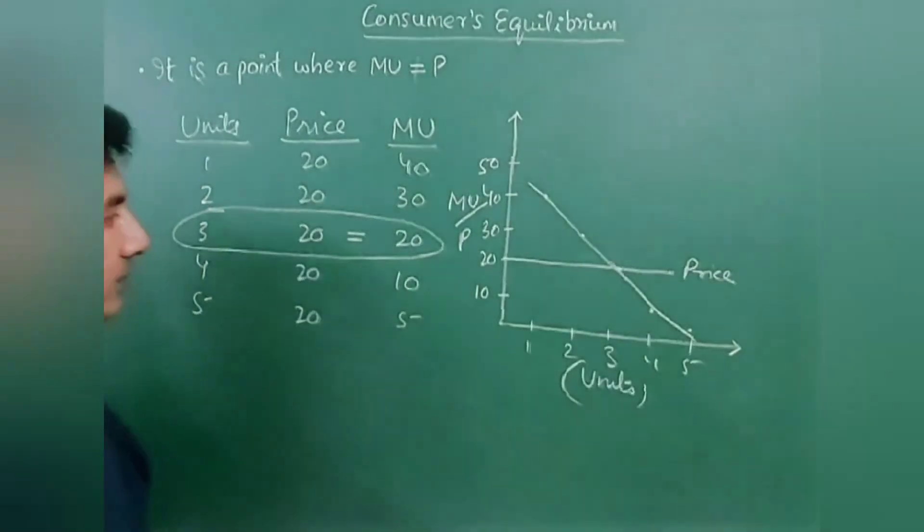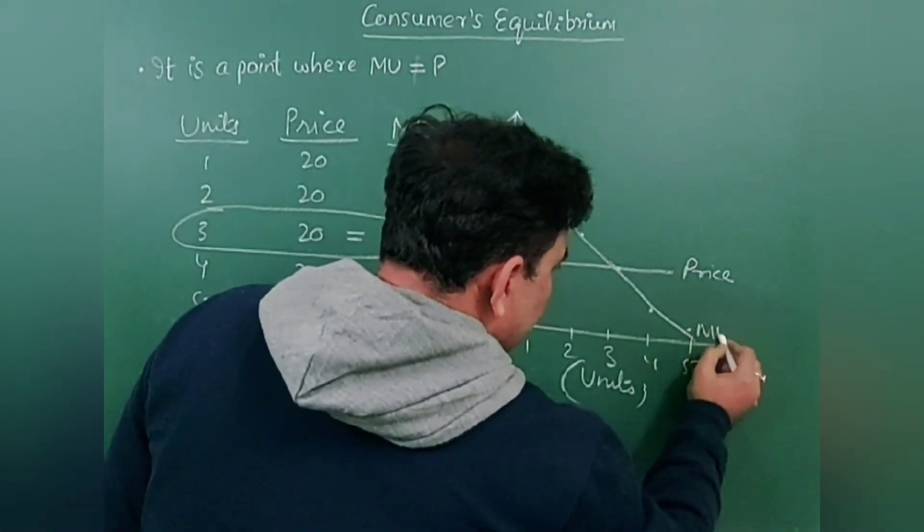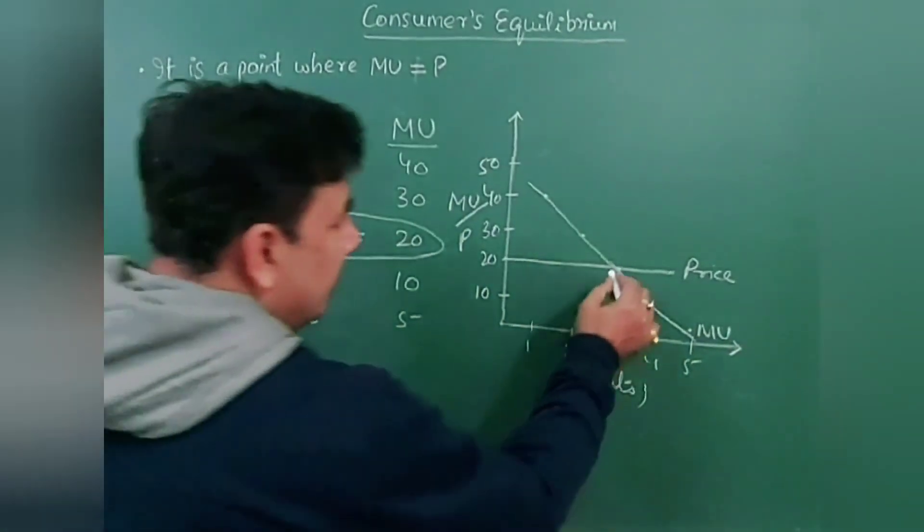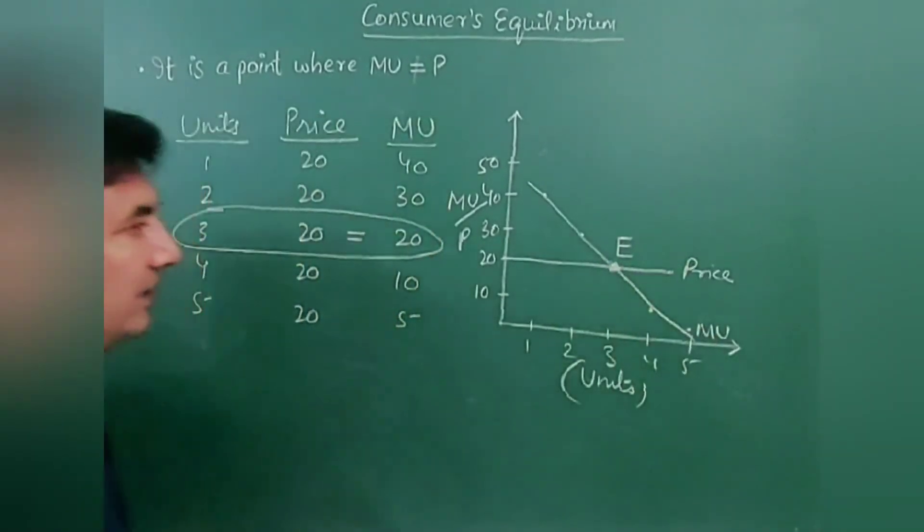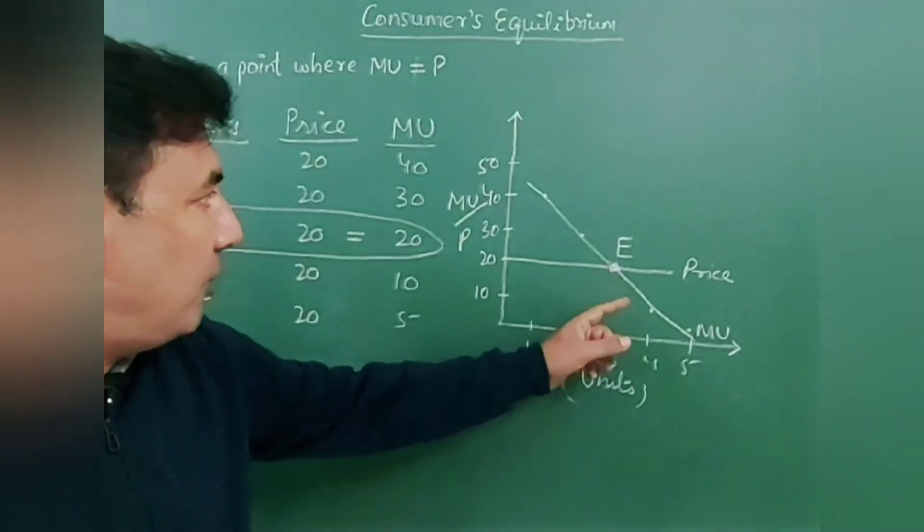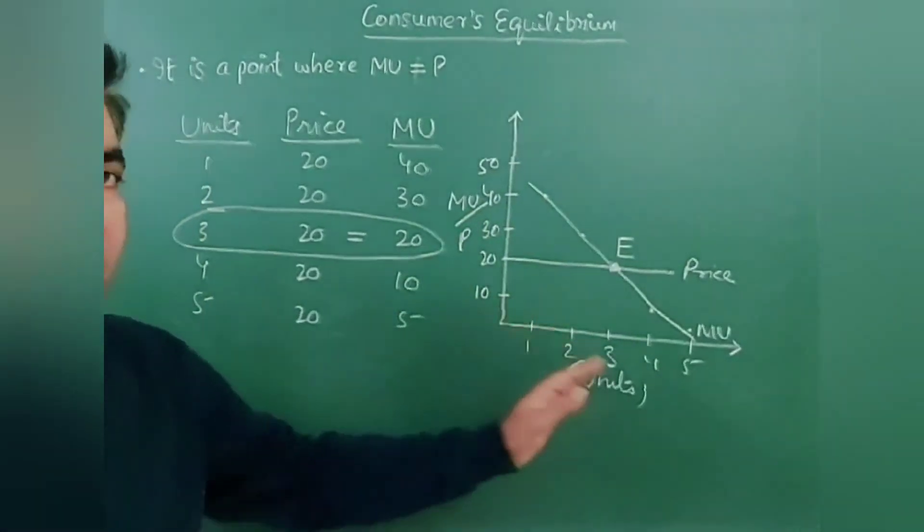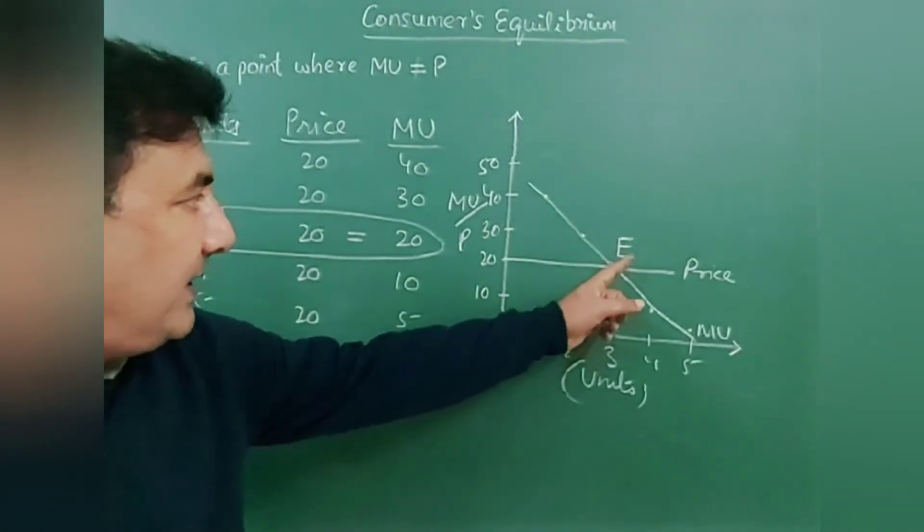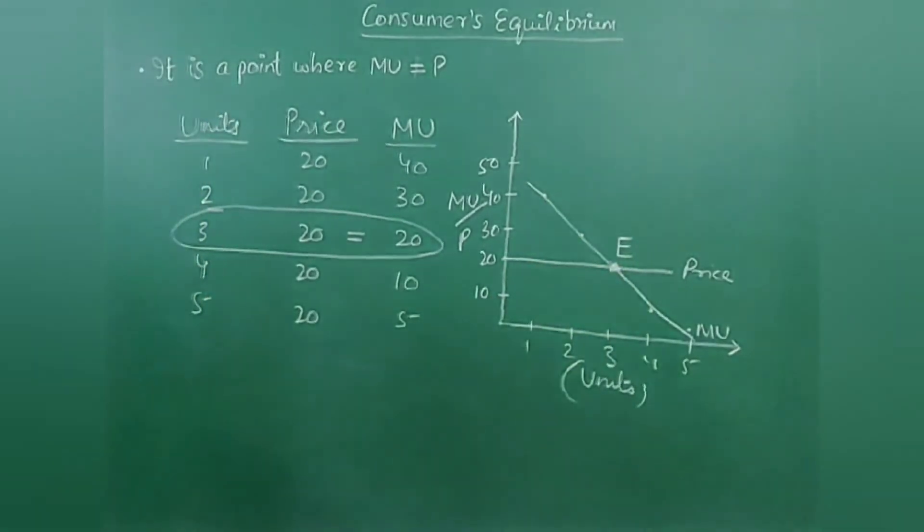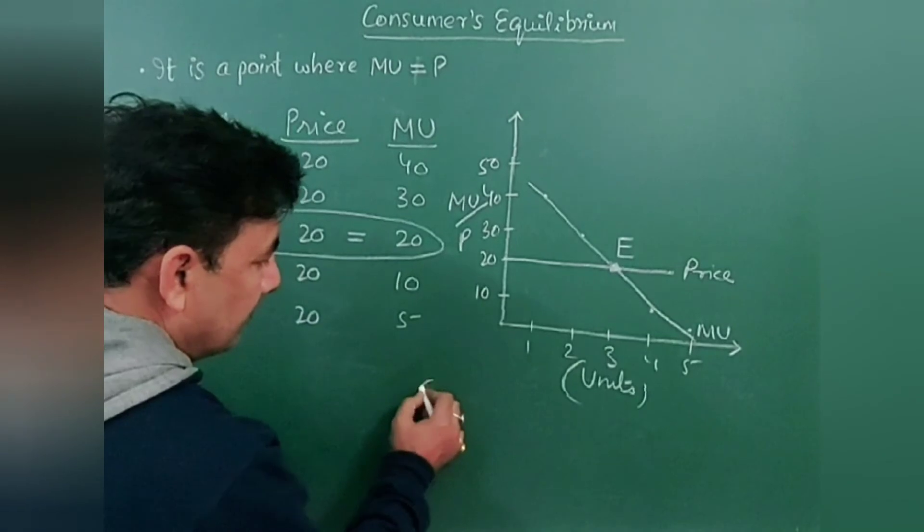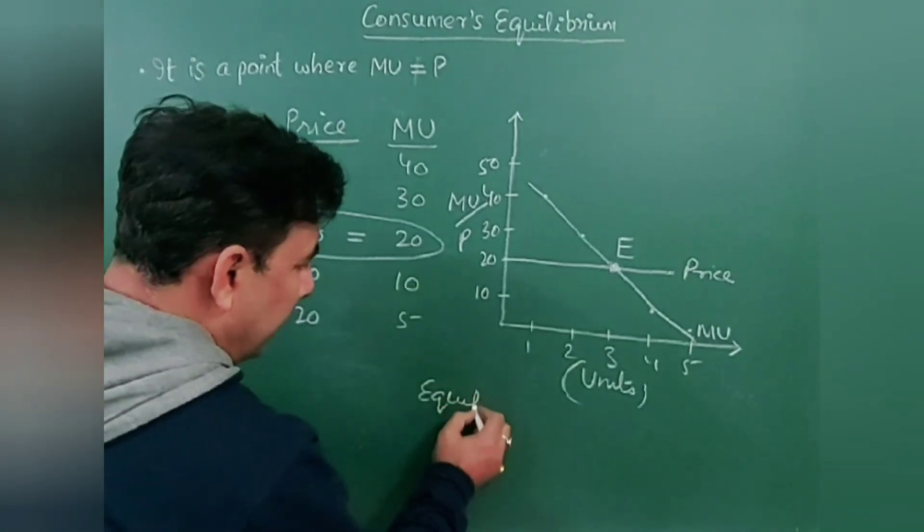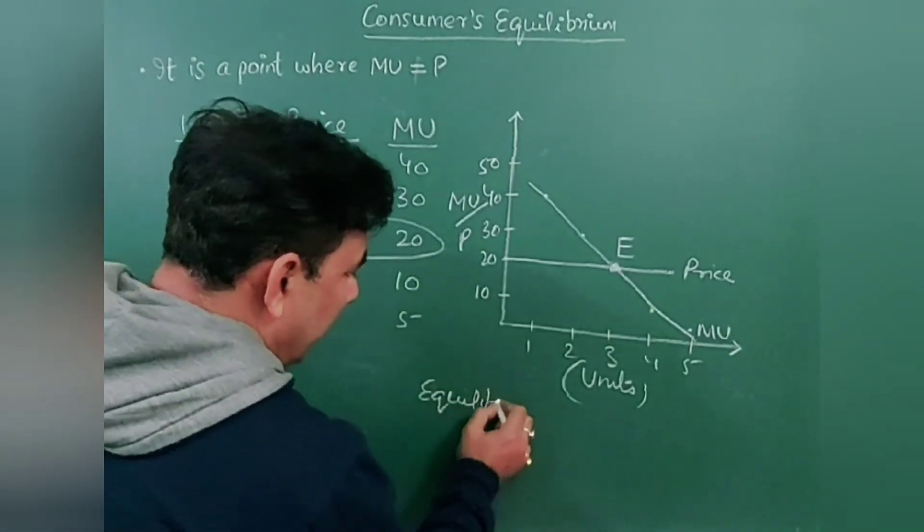So this is the marginal utility curve. At this particular point, this point is called equilibrium, consumer's equilibrium. At this point the consumer gets maximum satisfaction. So this E is called consumer's equilibrium, and here 20 is equilibrium price.